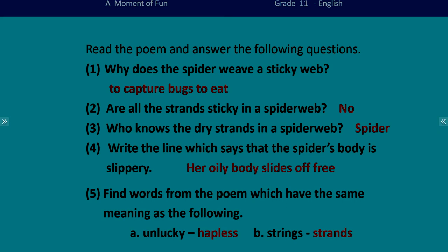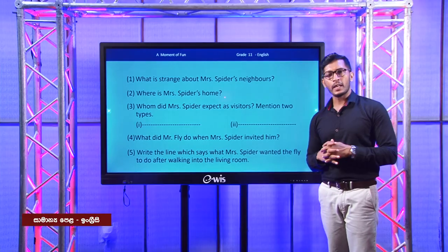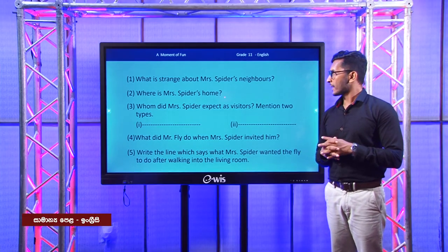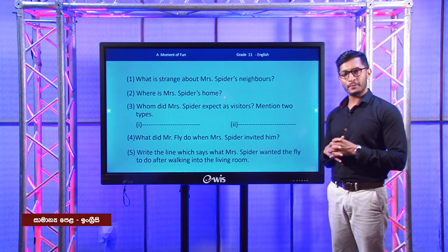Now I have another interesting poem for you to read. Let's see the questions first. What is strange about Mrs. Spider's neighbors? Where is Mrs. Spider's home? Whom did Mrs. Spider expect as visitors — mention two types. What did Mr. Fly do when Mrs. Spider invited him? Write the line which says what Mrs. Spider wanted the fly to do after walking into the living room. Now we know we are going to read a poem again about a spider, and we have a fly as a visitor.